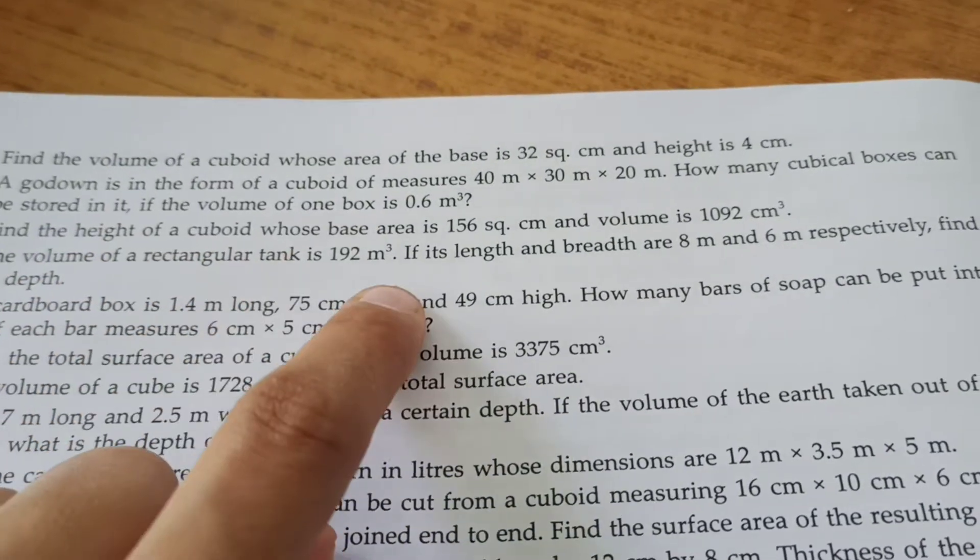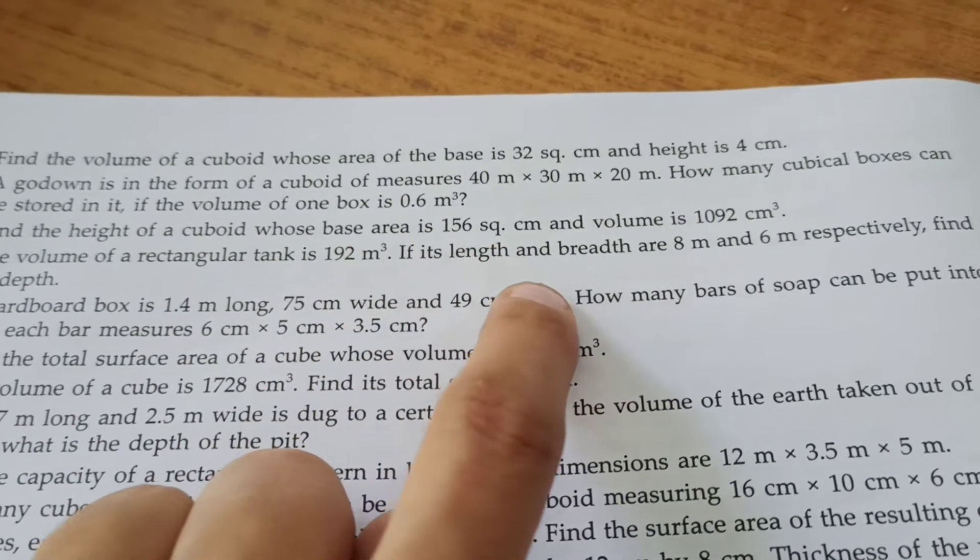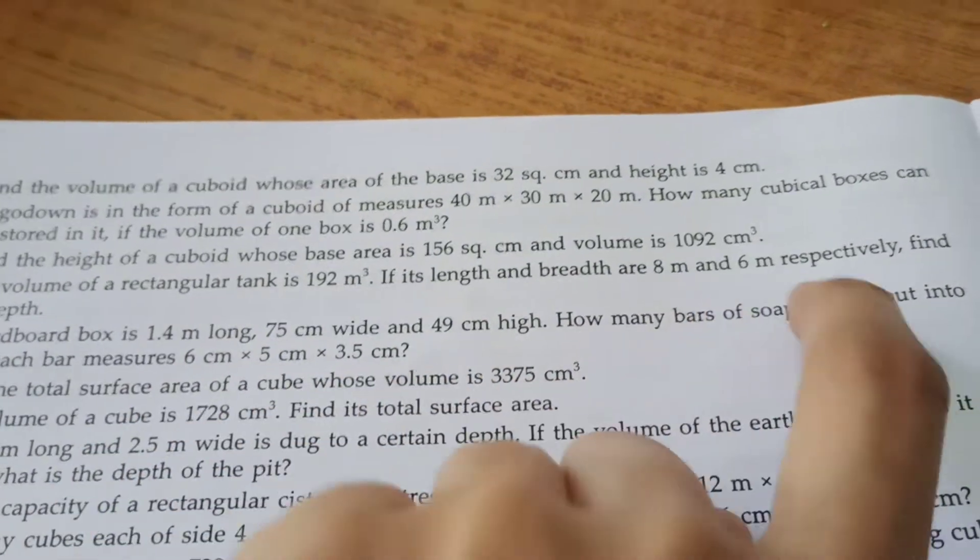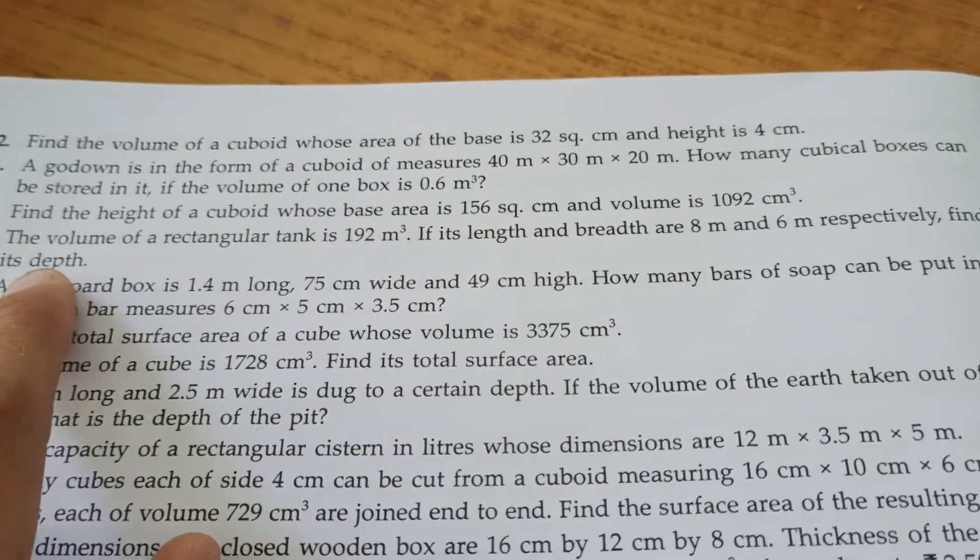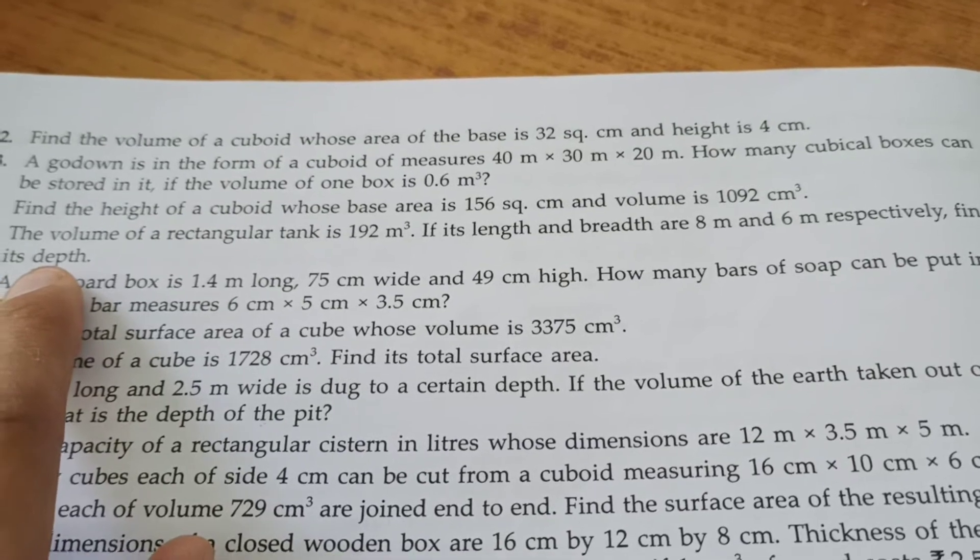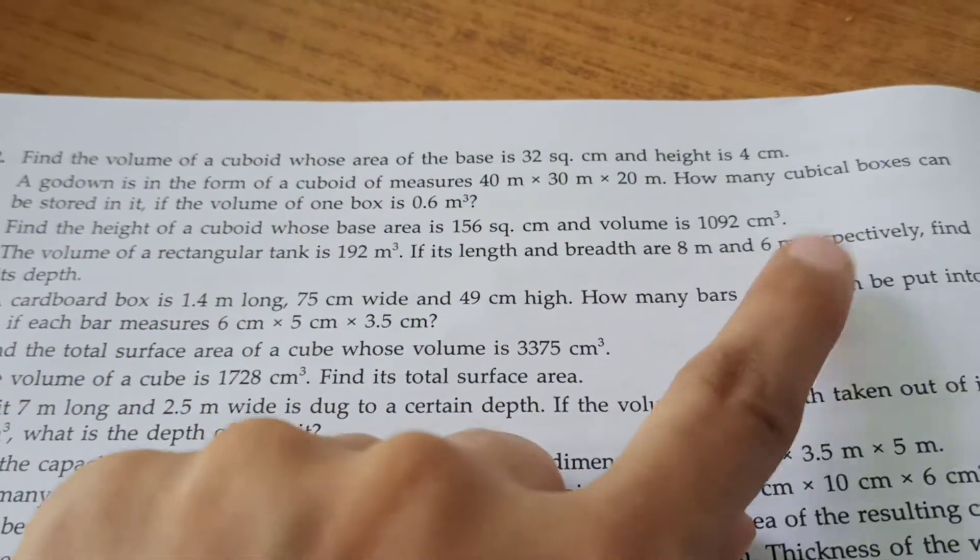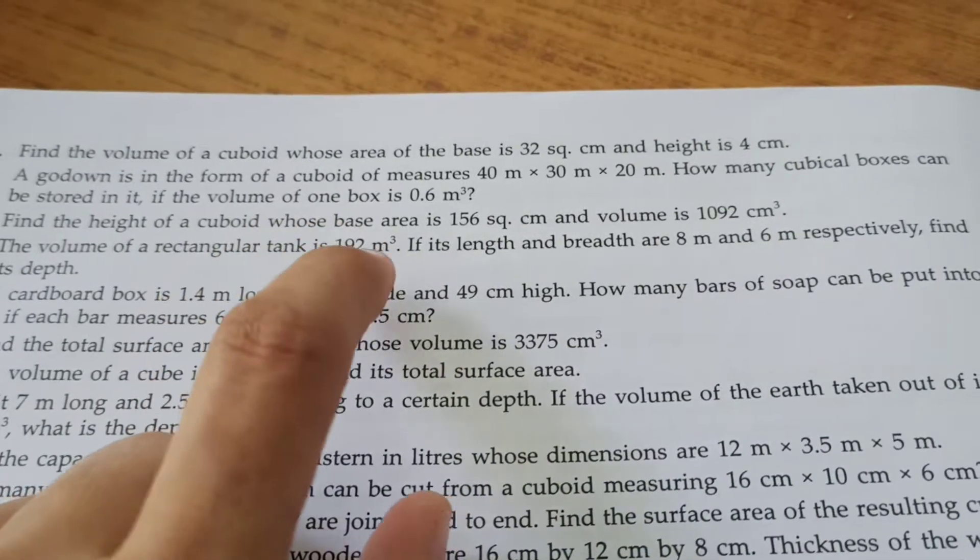Now, volume of a rectangular tank is 992 meter cube. If its length and breadth are 8 meter and 6 meter respectively, find its depth. Depth means height. Length and breadth are 8 and 6, so 8 into 6 into h equals 192, and we will get h.